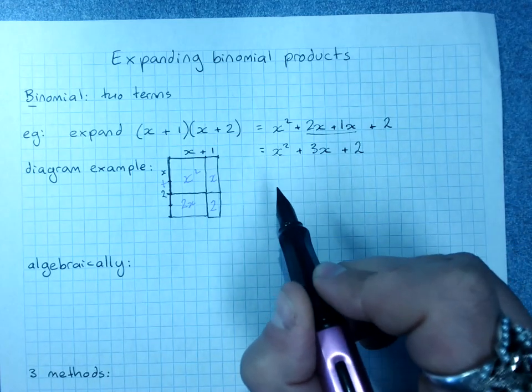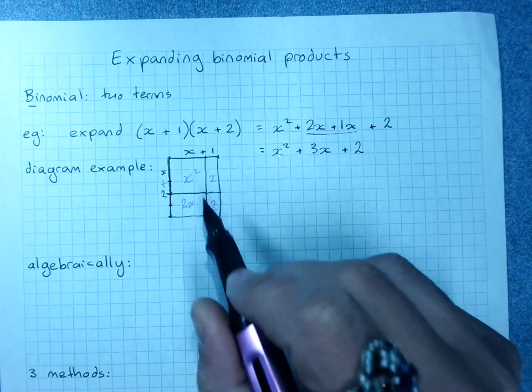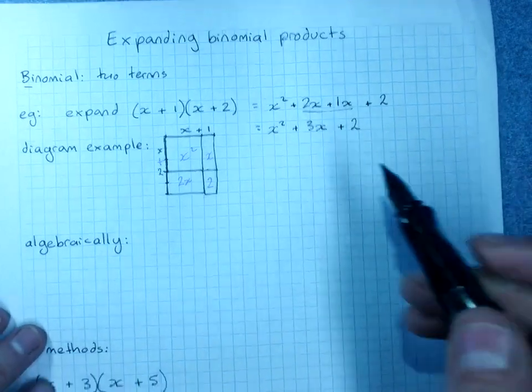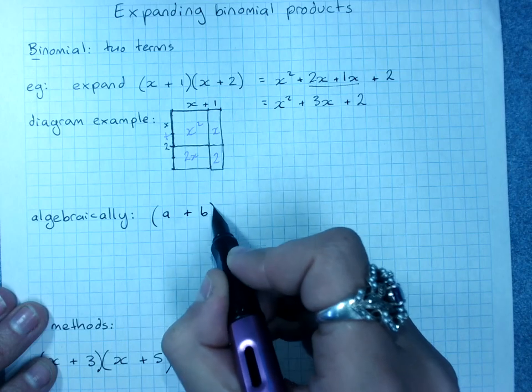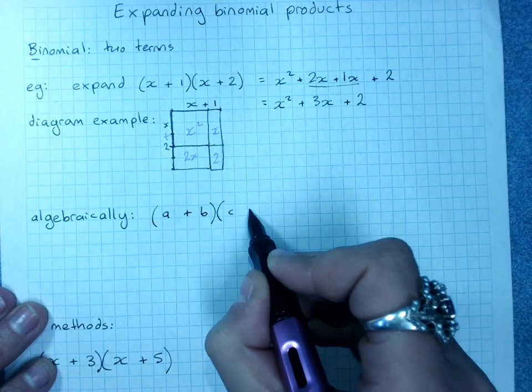And you'll notice we end up with three terms here. Algebraically, if I said, alright, we have a plus b multiplied by c plus d,